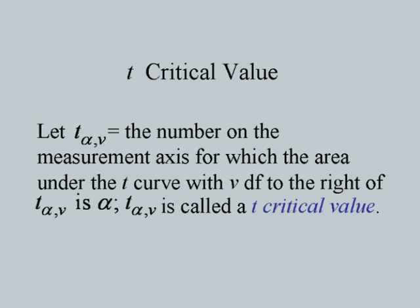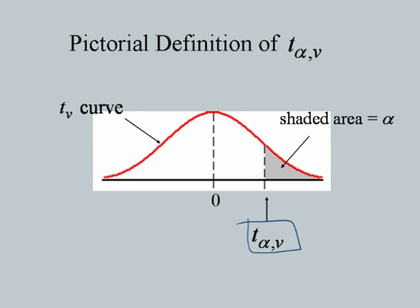The T critical values are represented as T-alpha,V — the number on the measurement axis for which the area under the T curve with V degrees of freedom to the right of this critical value is alpha. These values can be found from standard tables. For example, to find T-0.025 with 15 degrees of freedom, look at the row for 15 degrees of freedom and alpha = 0.025, giving the answer 2.131 — meaning the area to the right of 2.131 under T with 15 degrees of freedom is 0.025.